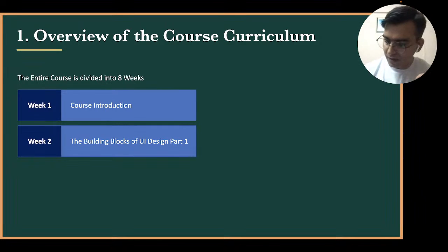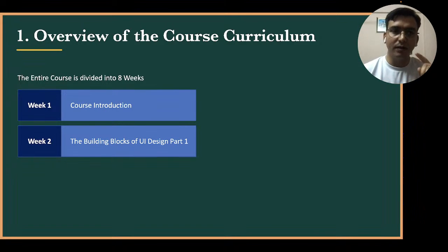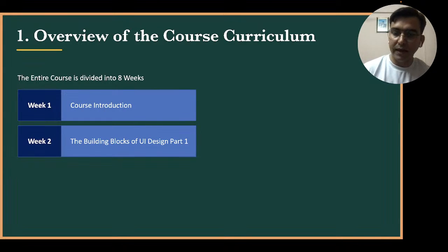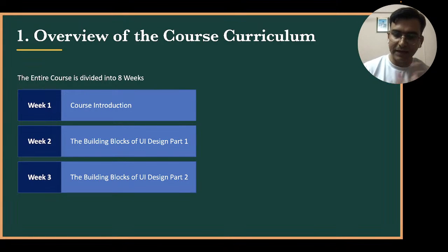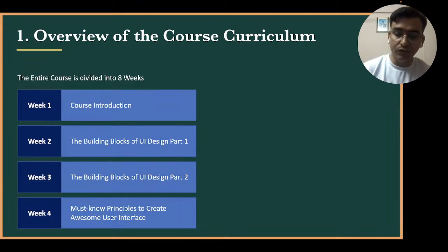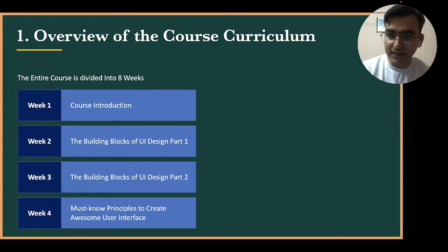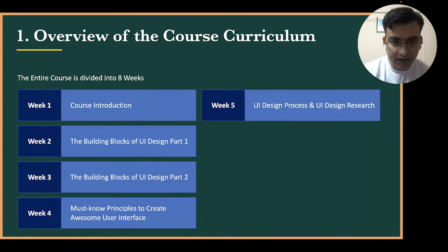The building blocks of UI design is so big that it's divided into two parts. When I say building blocks, I'm referring to the most important components of UI design — color theory, typeface, grid system, layout — all those things that help you build the entire UI. That covers weeks two and three. In week four, we'll talk about some must-know principles to create an awesome user interface, such as minimalism and simplicity.